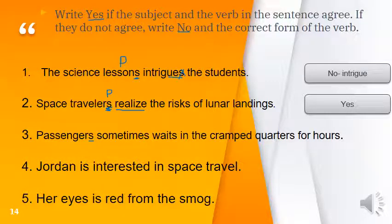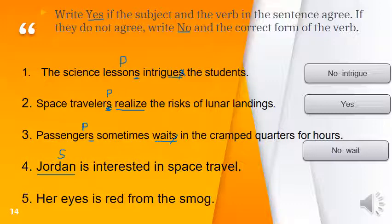Number three: 'Passengers sometimes waits.' Passengers is plural — we should not add S to the verb. So 'waits' is wrong; the correct form is 'wait'. Number four: 'Jordan is' — Jordan is a man's name, singular, like he. We use 'is' with he, so this is correct. Number five: 'Her eyes is.' Eyes is plural — if we replace it with a pronoun, it becomes 'they'. We can't say 'they is', so it's wrong. The correct form is 'her eyes are'.